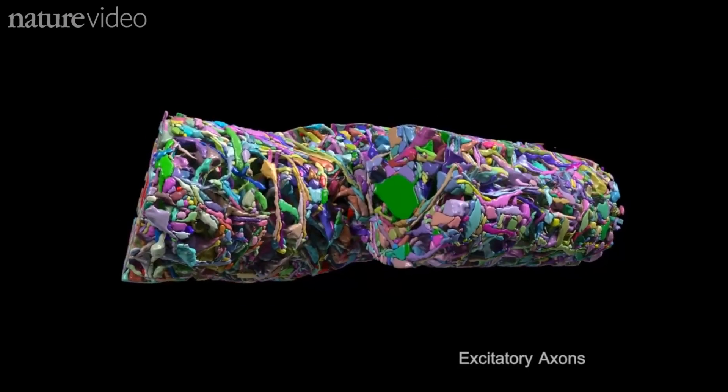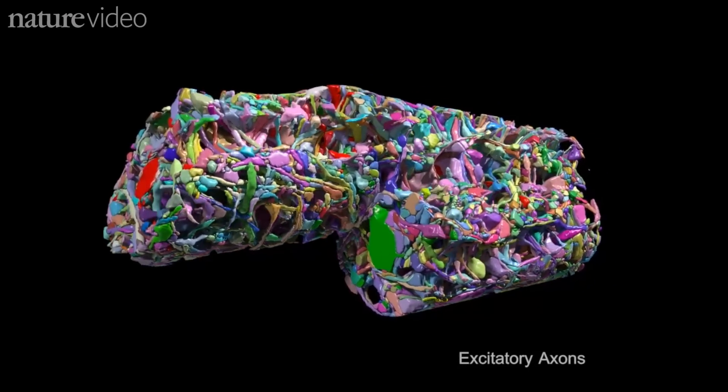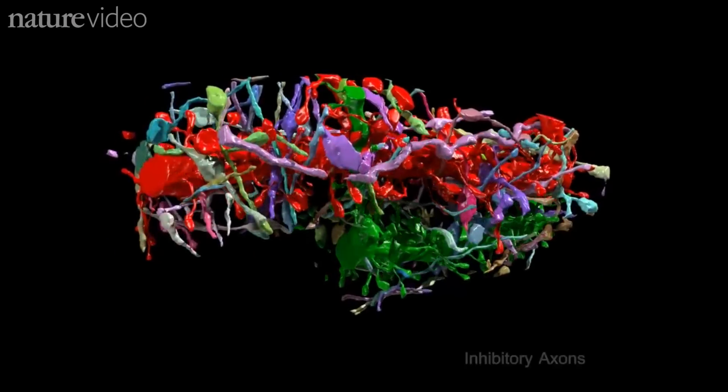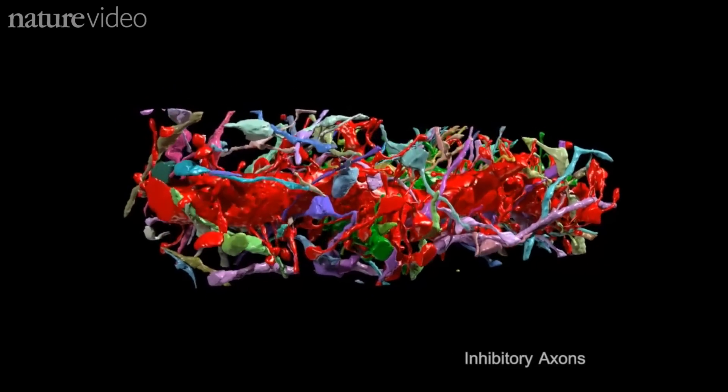Here are all the synapses, the connections that neurons make with each other. Here are the inhibitory connections, which dampen down activity.